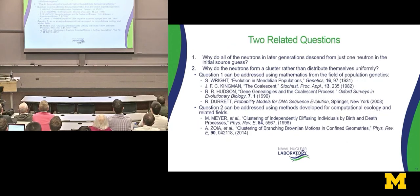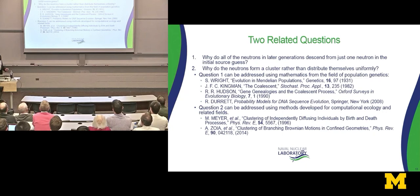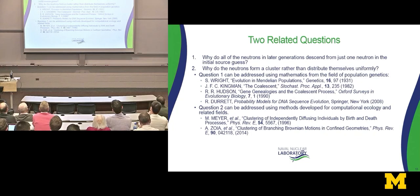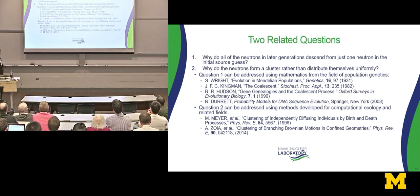We have two related questions to answer: Why do all neutrons in later generations descend from just one neutron in the initial source guess? And why do the neutrons form a cluster rather than distributing uniformly throughout the problem? To address question one, we used mathematics from the field of population genetics. To address question two, we used methods developed for computational ecology, drawing heavily from two papers in Physical Review E.